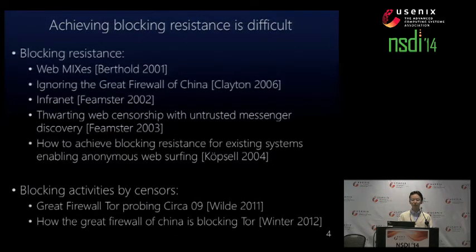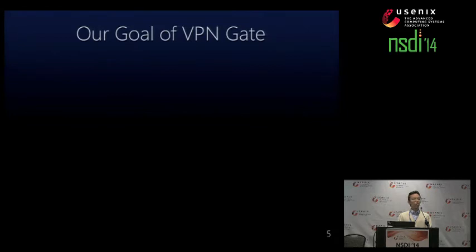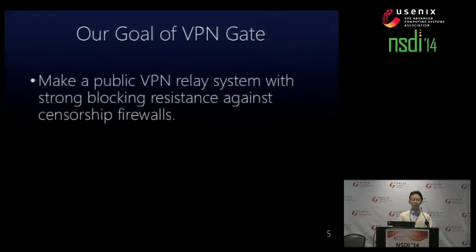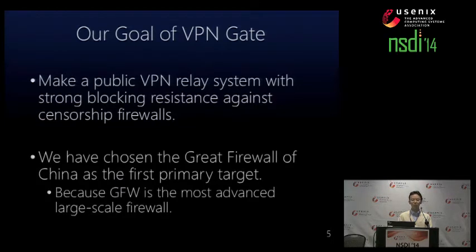Achieving blocking resistance is very difficult, according to research. So our goal of VPN Gate is to make a public VPN system with strong blocking resistance against censorship firewalls. We have chosen the Great Firewall of China as the first primary target, because it is the most advanced large-scale firewall in the world.